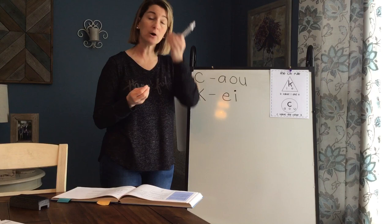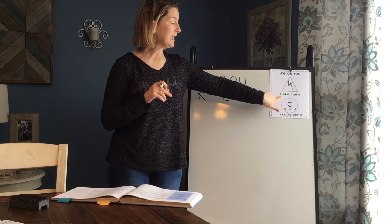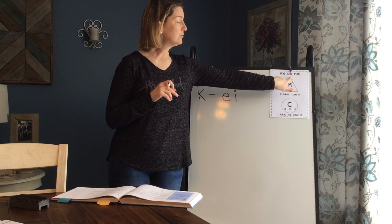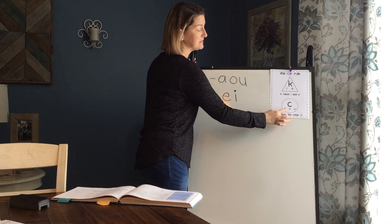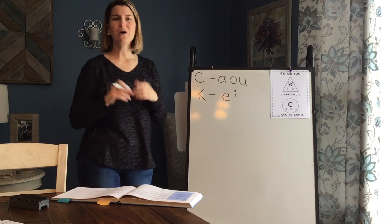Now, I know that can be tricky and hard to remember, but you just really need to keep practicing it and remembering it. I have this poster here called the C-K rule. K takes the I and the E. So if you have an I or an E, you're using the letter K to spell that kk sound. If your word has an A, an O, or a U, you're using the letter C to make the kk sound. That's what we call the C-K rule.